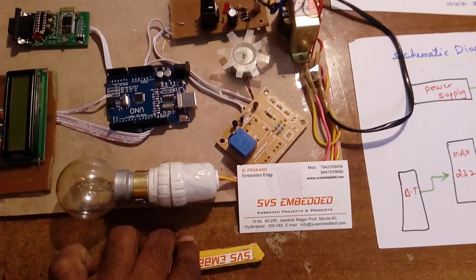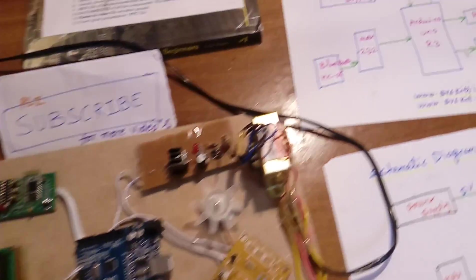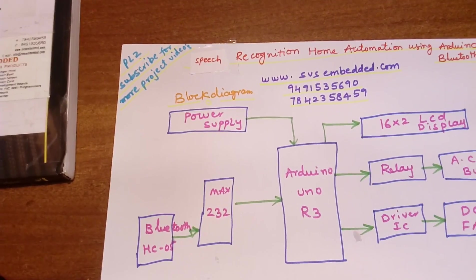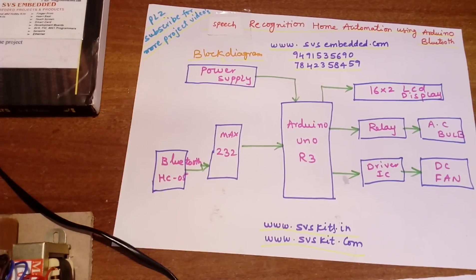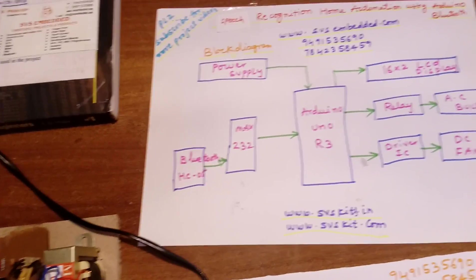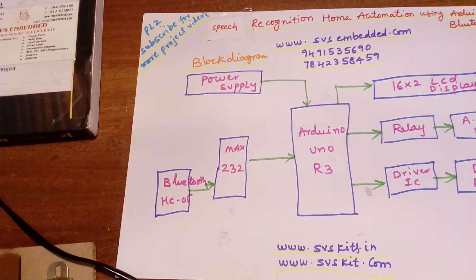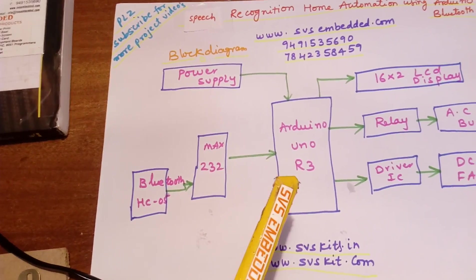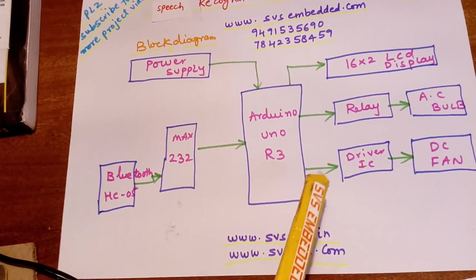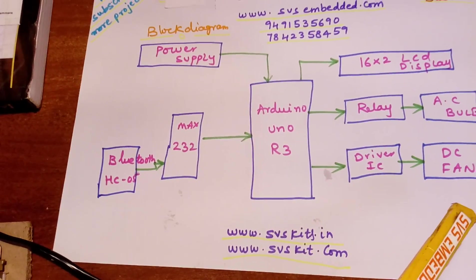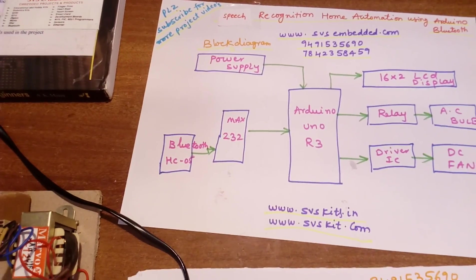Hi, we are from SVS Embedded. The project title is called Speech Recognition Home Automation using Android Bluetooth. For this project I'm using an Arduino Uno R3, one 16x2 LCD display, one relay coil, one AC bulb, one driver IC, one DC fan, one MAX232, and an HC-05 Bluetooth module.